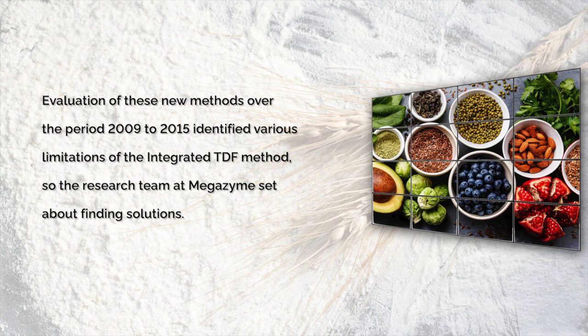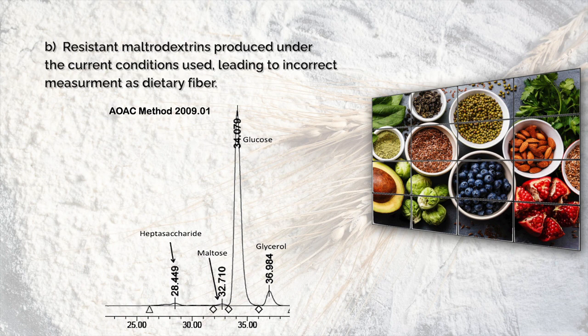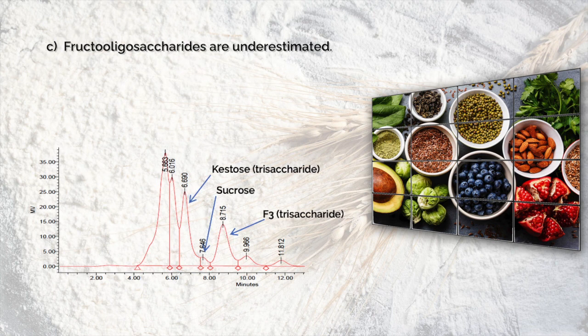The research team at Megazyme set about finding solutions. Criticisms of the method were: A. The 16-hour digestion step with pancreatic alpha amylase plus amyloglucosidase has no physiological base; a more likely time of residence in the human small intestine is approximately 4 hours. B. Resistant maltodextrins are produced from non-resistant starch under the incubation conditions used and are measured incorrectly as dietary fibre. C. Fructo-oligosaccharides are underestimated using the Waters Sugar Pack HPLC column; fructotriose chromatographs as a disaccharide and thus is not included in the dietary fibre value.